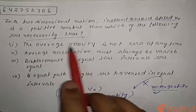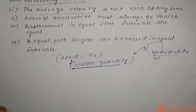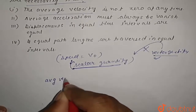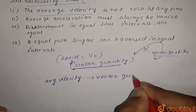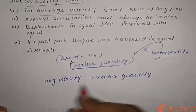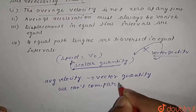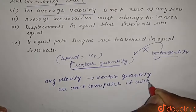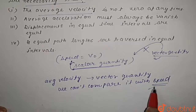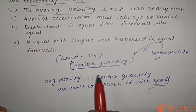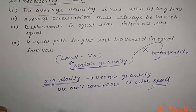Option one says the average velocity is not zero at any time. Average velocity is a vector quantity. Since we only have information about speed, which is a scalar, we cannot compare it with average velocity. So we cannot say anything about this, and option one is incorrect.